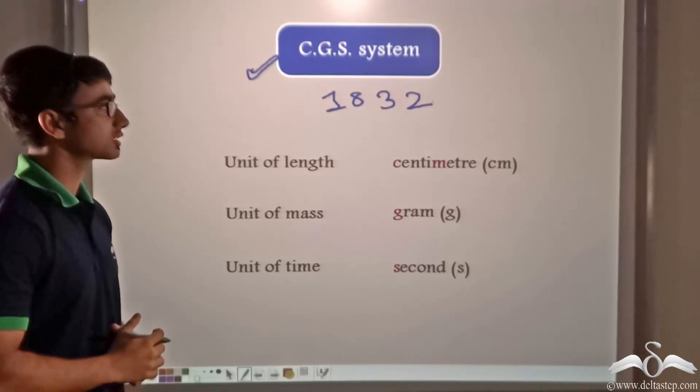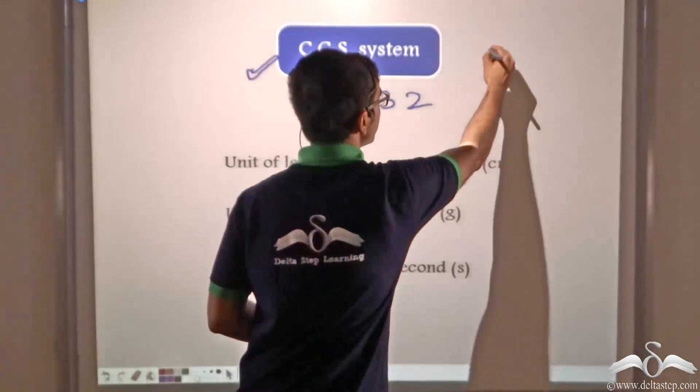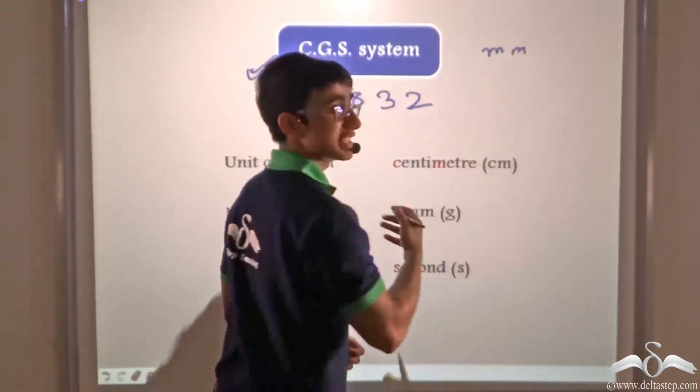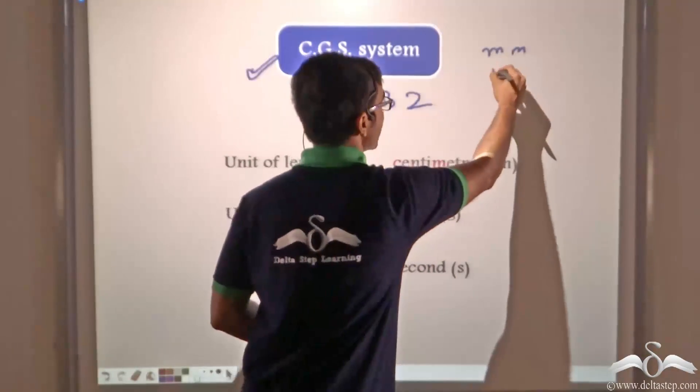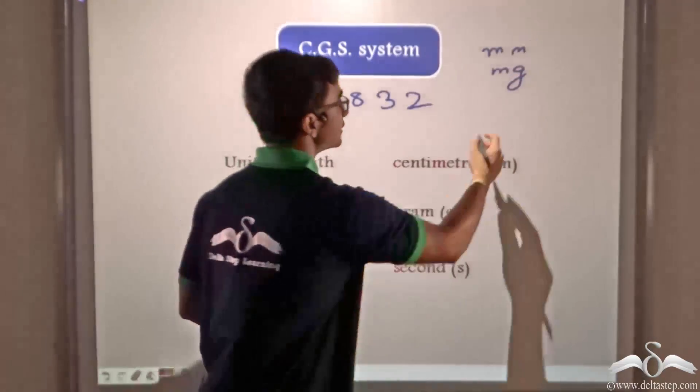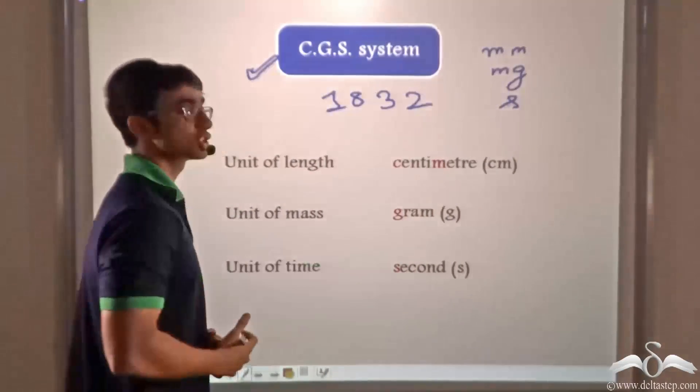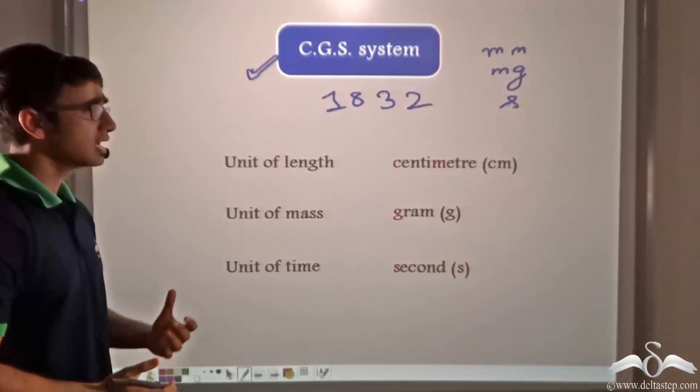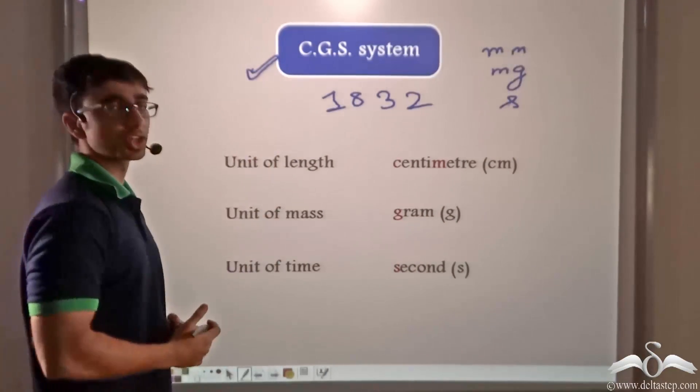milligram be used for measuring mass and seconds be used for measuring time. Now although Carl Friedrich Gauss proposed this, several difficulties were observed.